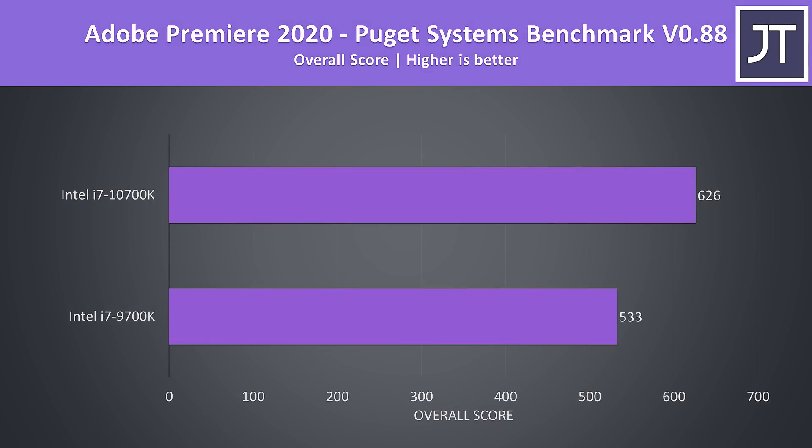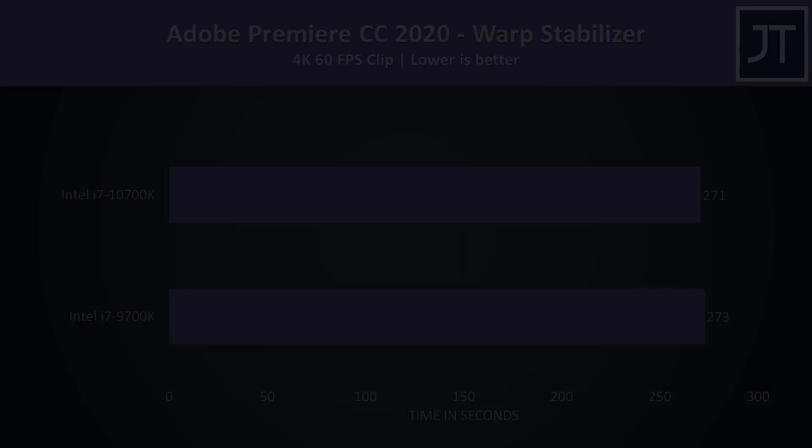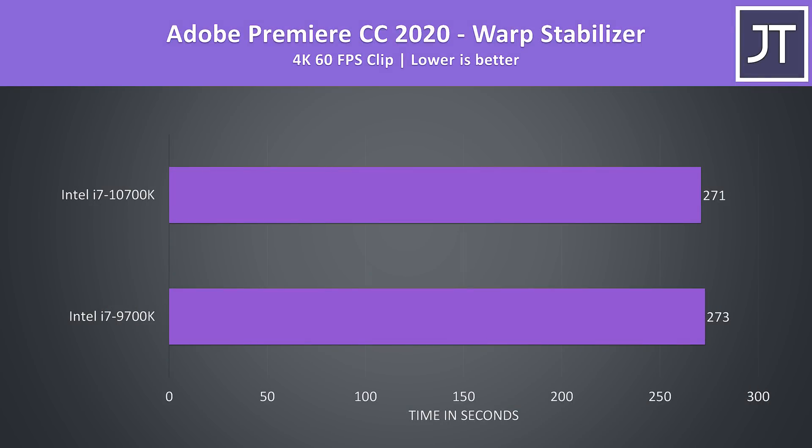Premiere was also tested using the Puget Systems benchmark tool, which tests more than just exporting such as live playback, and there was a 17% higher score with the 10th gen processor. I've also tested the warp stabilizer effect in Adobe Premiere, which is a less-threaded workload used to smooth out a video clip, and there was the smallest difference out of all applications tested, with the 10th gen processor just a couple of seconds faster.